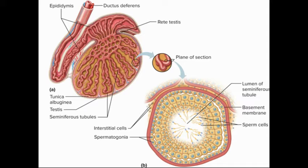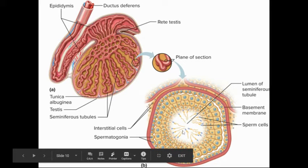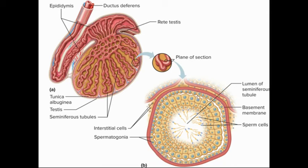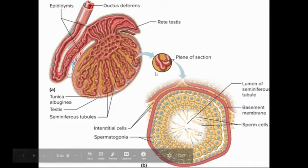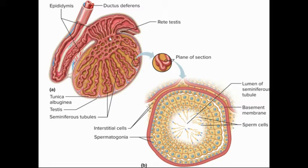Here's another view. These are the seminiferous tubules — zoomed in, cut in half, and viewed down the end. This is the actual thickness of the tubing; this is the hollow space where the sperm end up. Production starts at the outer edge and moves inward. Spermatogonia are the stem cells that make the sperm, going through meiosis one and meiosis two to produce a primary spermatocyte, then a secondary spermatocyte, and finally a spermatid. These are still not fully functional sperm and must be transported to the epididymis for continued maturation before moving through the ductus deferens, also called the vas deferens.